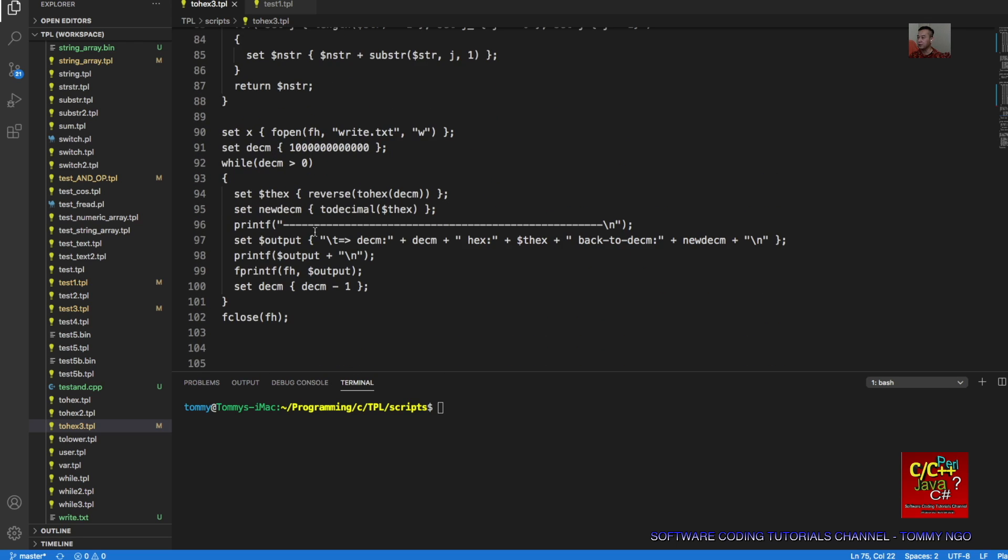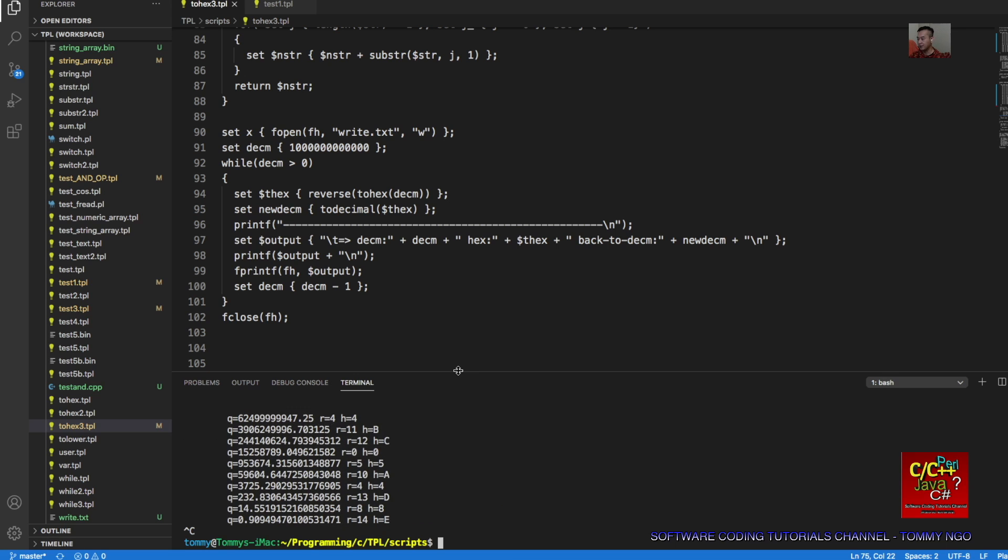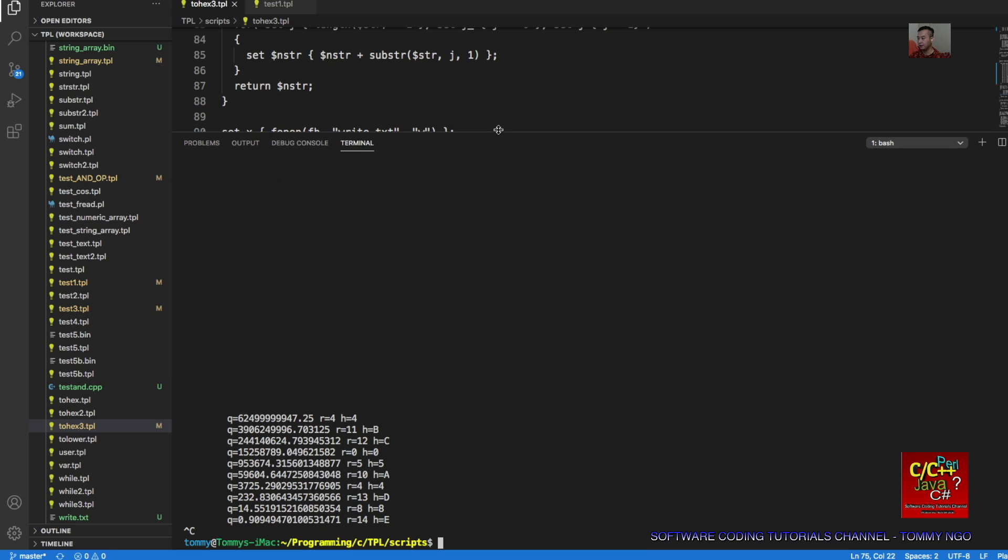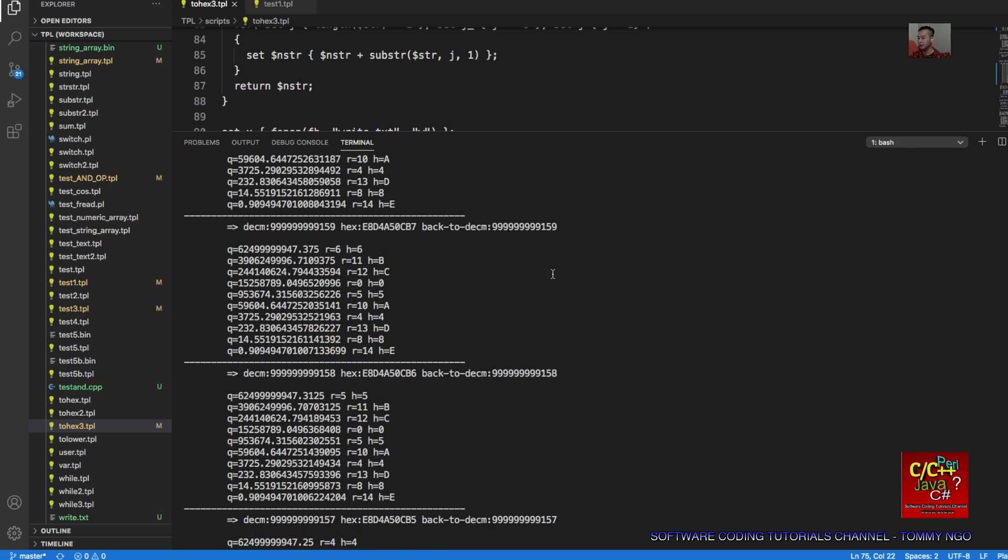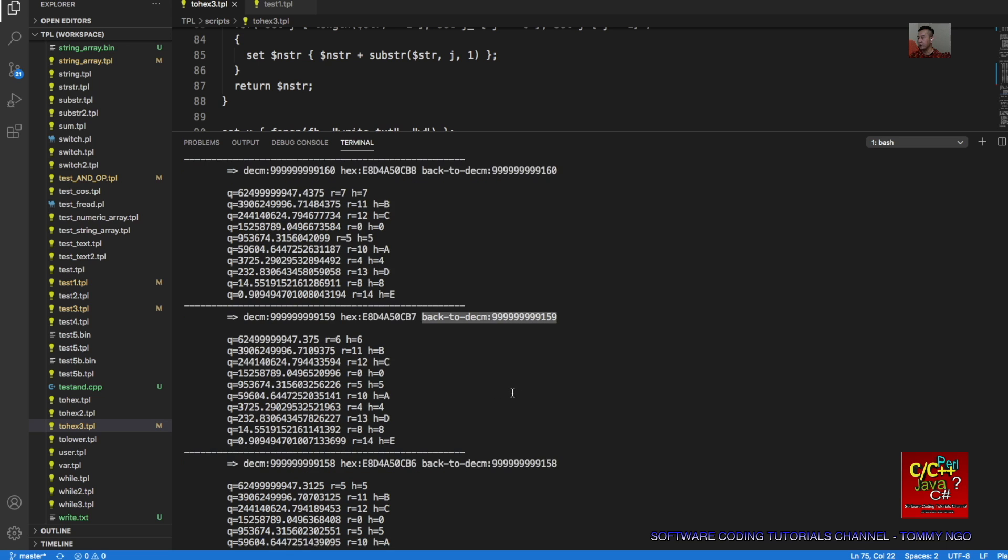With no further ado, I can execute it for you. Just type in 2hex.tpl. You can see that it's actually converting very fast. Here's a decimal value, here's the actual hex string, and then back to the actual decimal value.